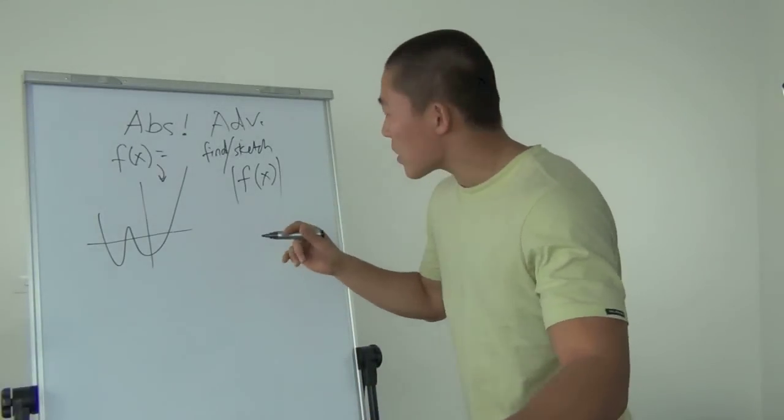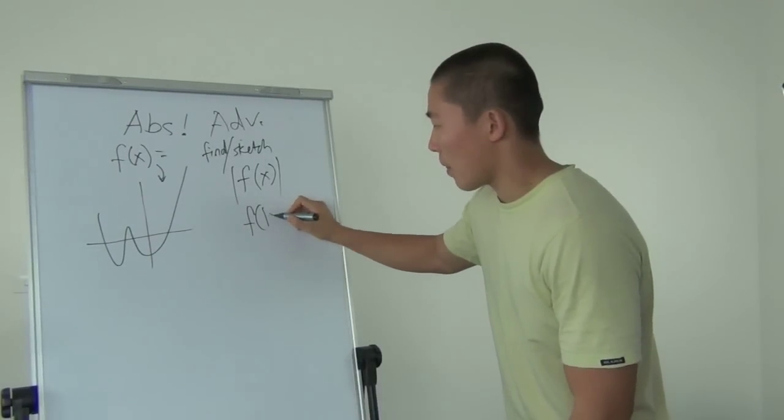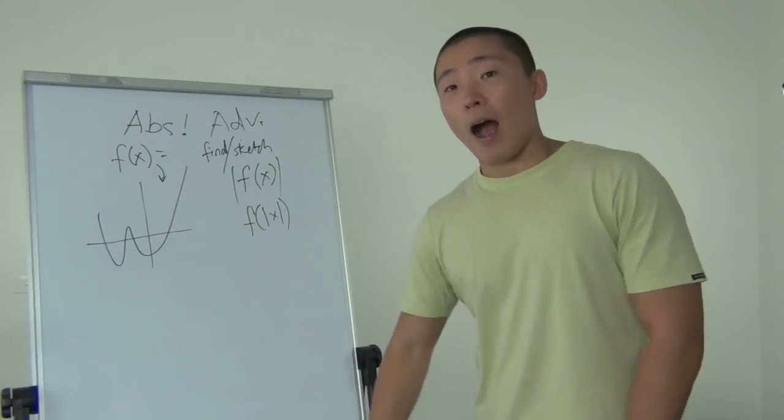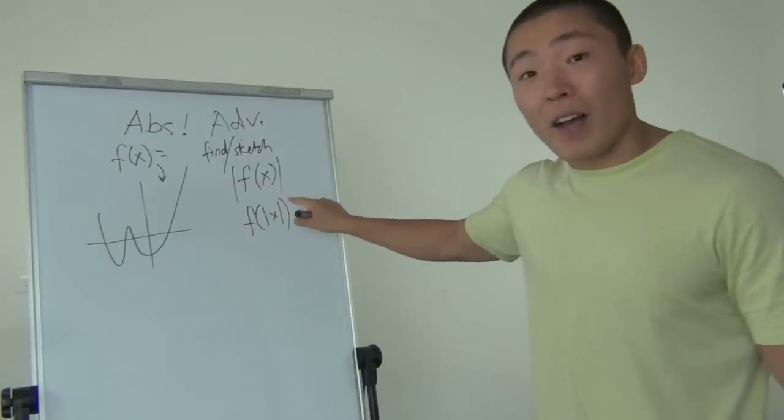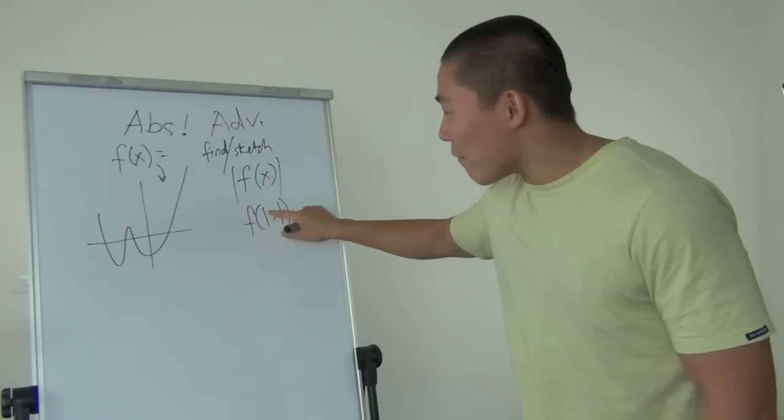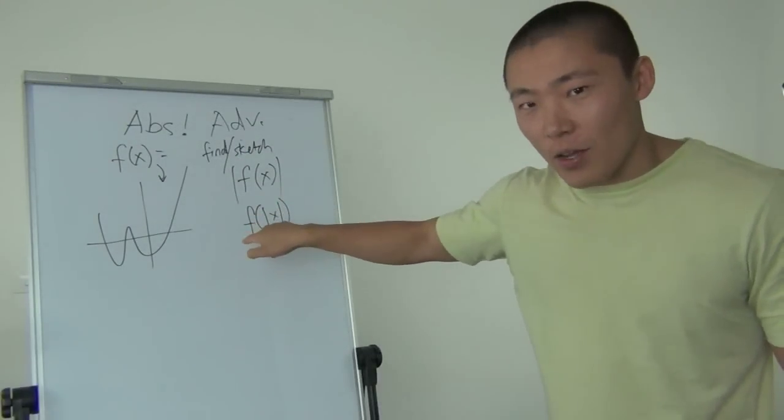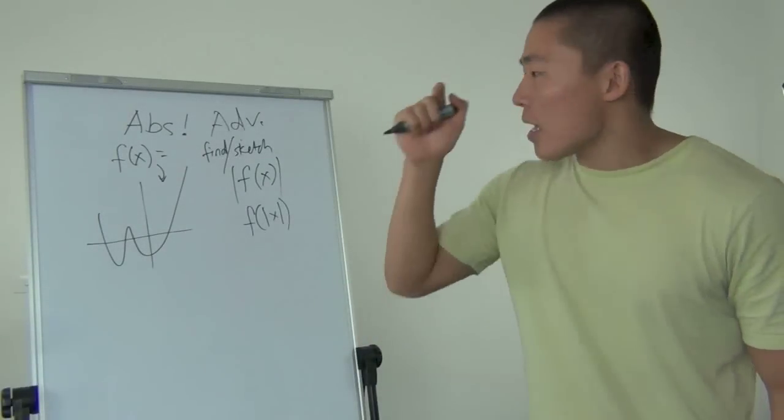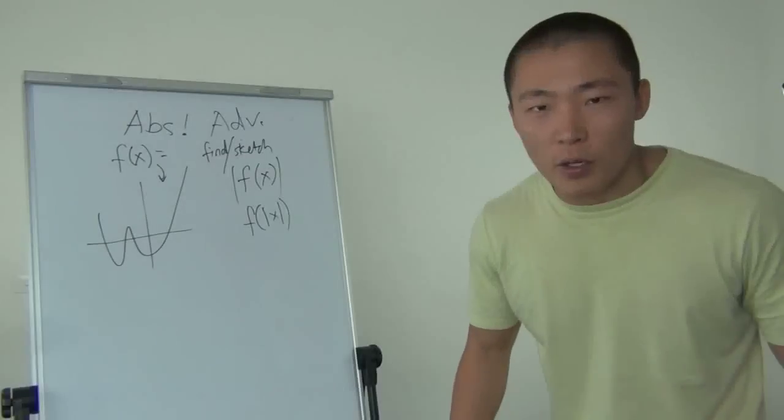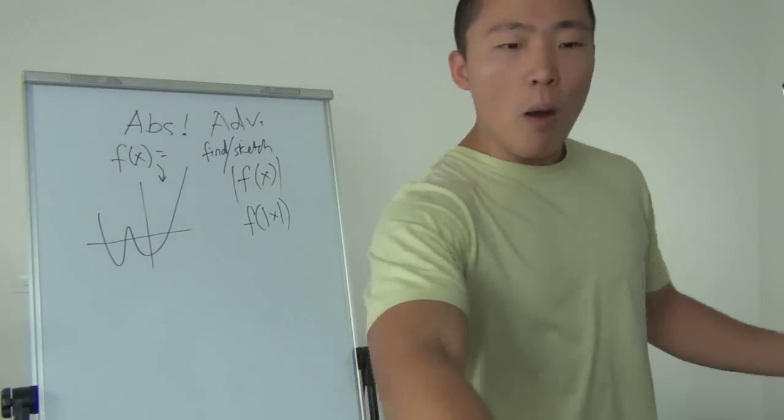Now we know how to do this, don't we? Of course we do because we're smart. But what happens when it looks like this though? The absolute function inside the f bracket, so absolute is only around the x. That is a totally different case.